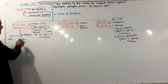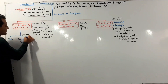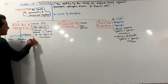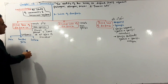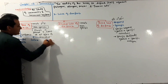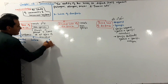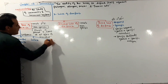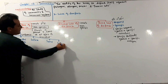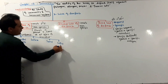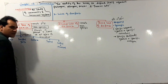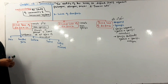The first line of defense includes saliva, tears, cilia, and cilia plus mucus. These components together form the first line of defense against pathogens.